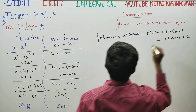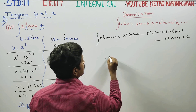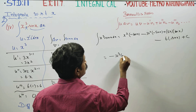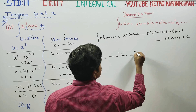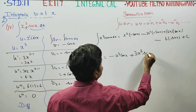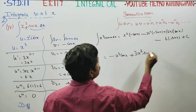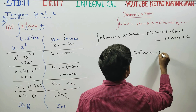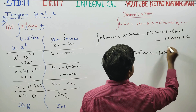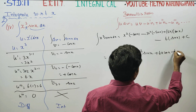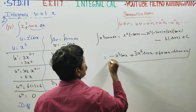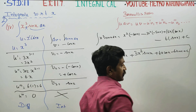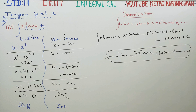Plus c. The final answer is: minus x³·cos x plus 3x²·sin x plus 6x·cos x minus 6·sin x plus c. Okay, thank you.